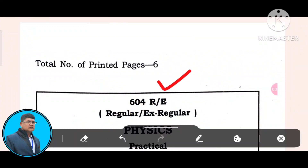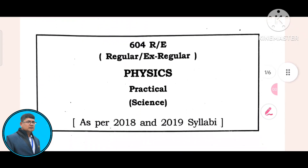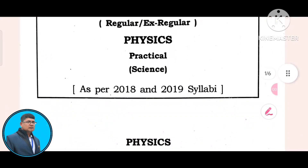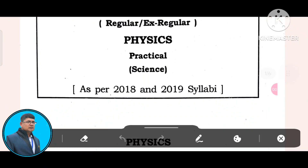Look at this. This is the question: 604, regular and extra-regular. Physics practical science — physics practical science, as per 2018.